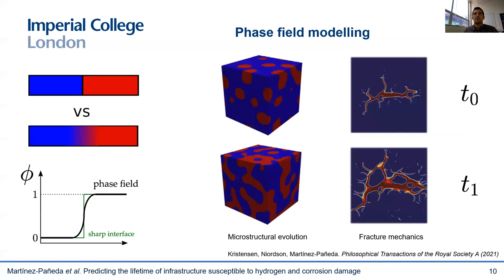Phase field methods are becoming notably popular in many areas in science and engineering. Two of these areas are microstructural evolution and fracture mechanics. As you can see in the slide, very complex interfacial phenomena can be simulated, such as branching and merging of cracks, and the nucleation of cracks from secondary sites. I will show later also how this method can be used to track the evolution of the corrosion front. The possibility of simulating evolving interfaces combined with coupled multi-physics modeling lies the basis for using computers to predict environmental assisted failures, and to extend virtual testing to civil engineering infrastructure.